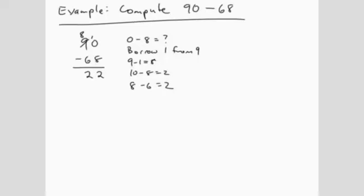Notice that we had to think about four different calculations, including the one that we couldn't do. And we also had these various bookkeeping steps like crossing out the 9 to write an 8 and putting the little 1 next to the 0. Now let's compare this to the two-step approach.